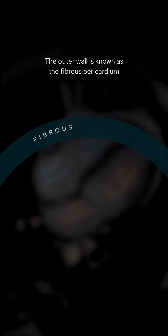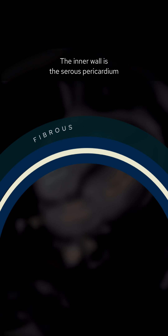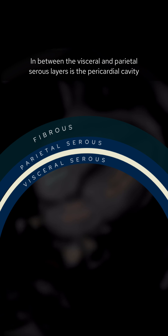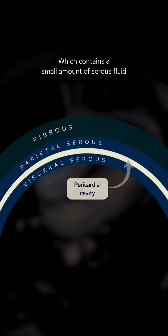The pericardium has several layers. The outer wall is known as the fibrous pericardium and is made up of connective tissue. The inner wall is the serous pericardium, made up of a layer of epithelial cells that is reflected on itself. The inner layer is the visceral serous pericardium and the outer, the parietal serous pericardium. In between the visceral and parietal serous layers is the pericardial cavity, which contains a small amount of serous fluid. This reduces friction during contraction of the ventricles.